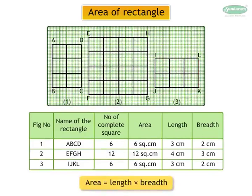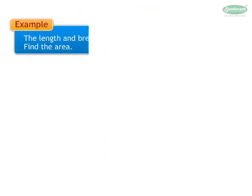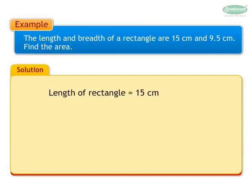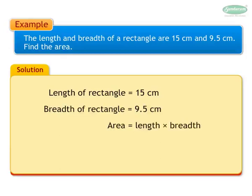From the table we can see that area is equal to the product of the length and breadth of the rectangle. Example: The length and breadth of a rectangle are 15 centimeters and 9.5 centimeters. Find the area. Length is equal to 15 cm, breadth is equal to 9.5 cm.